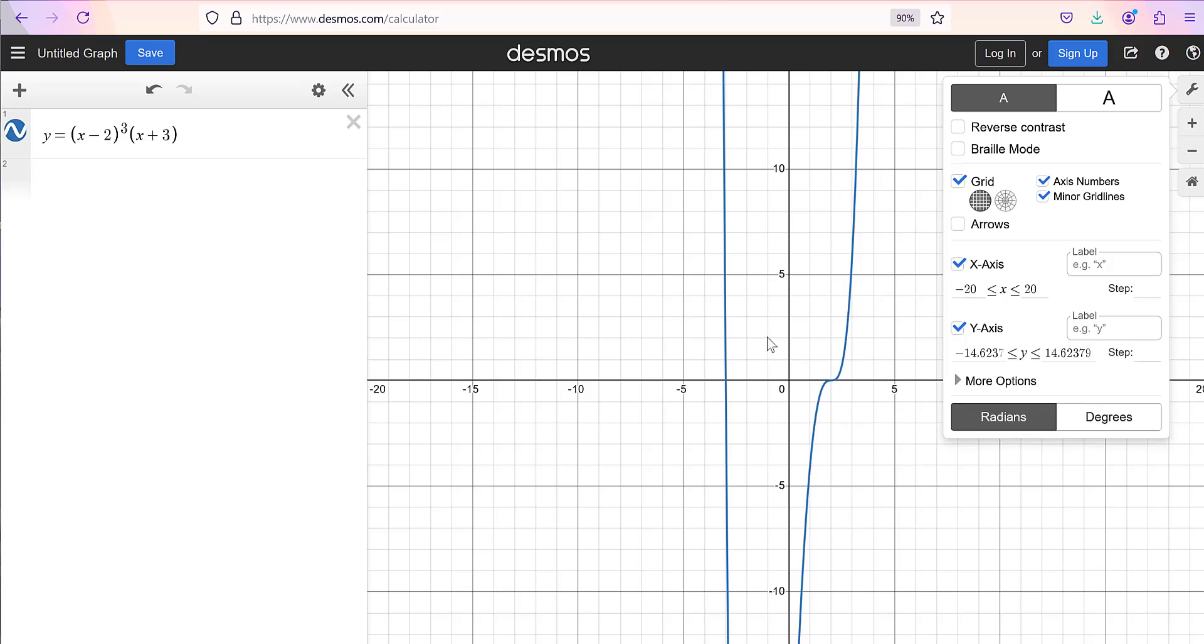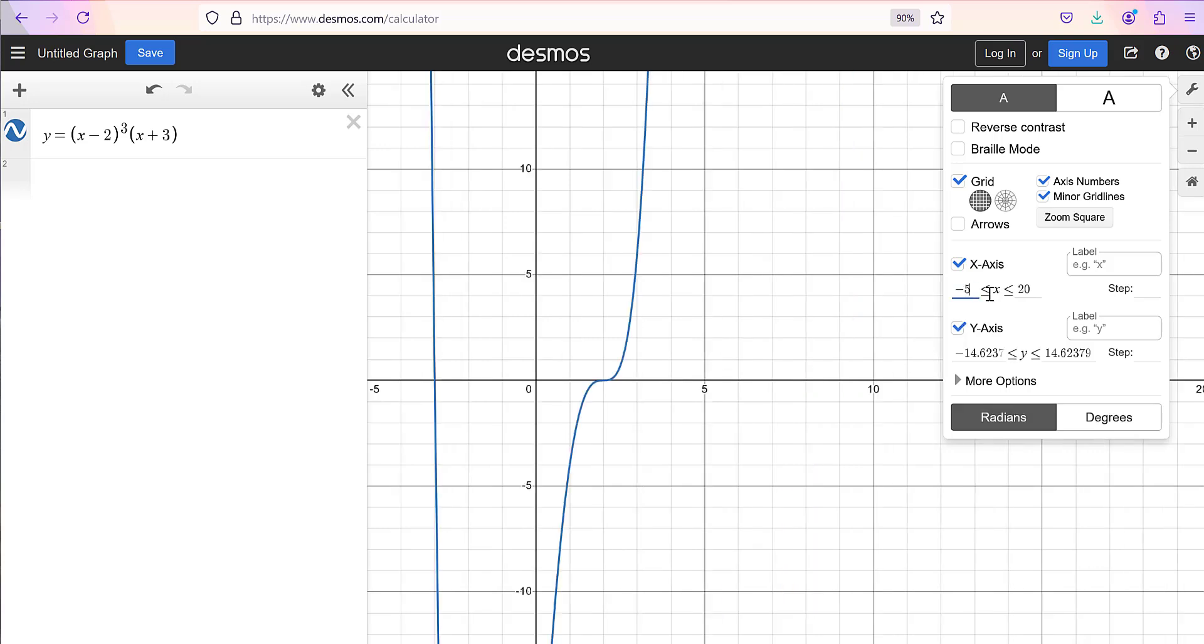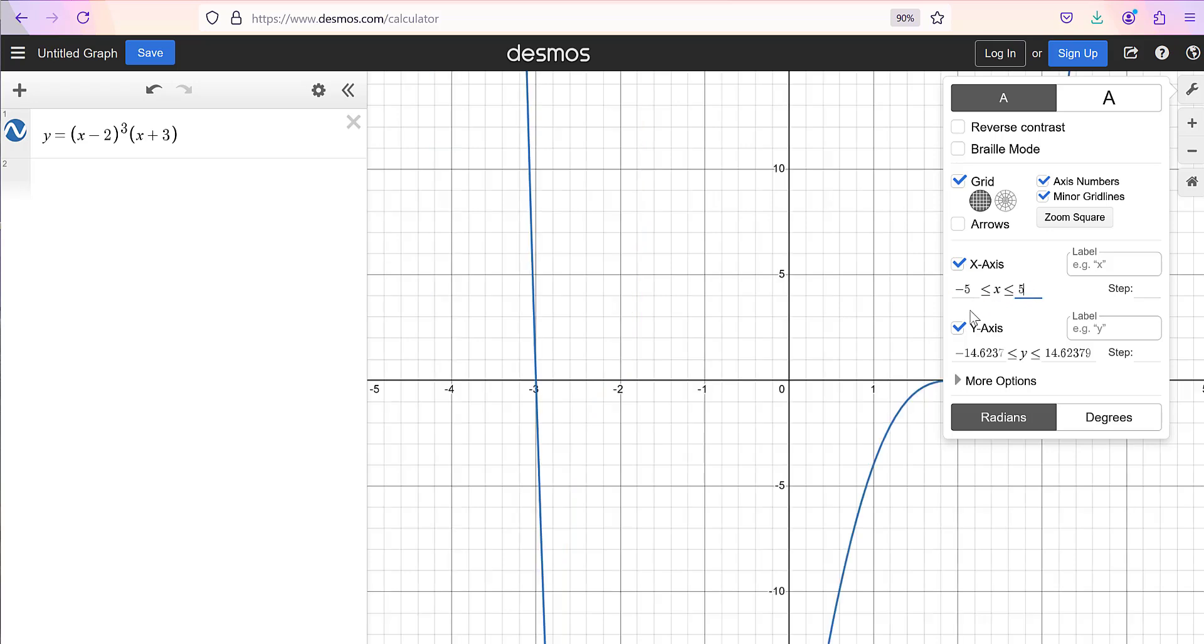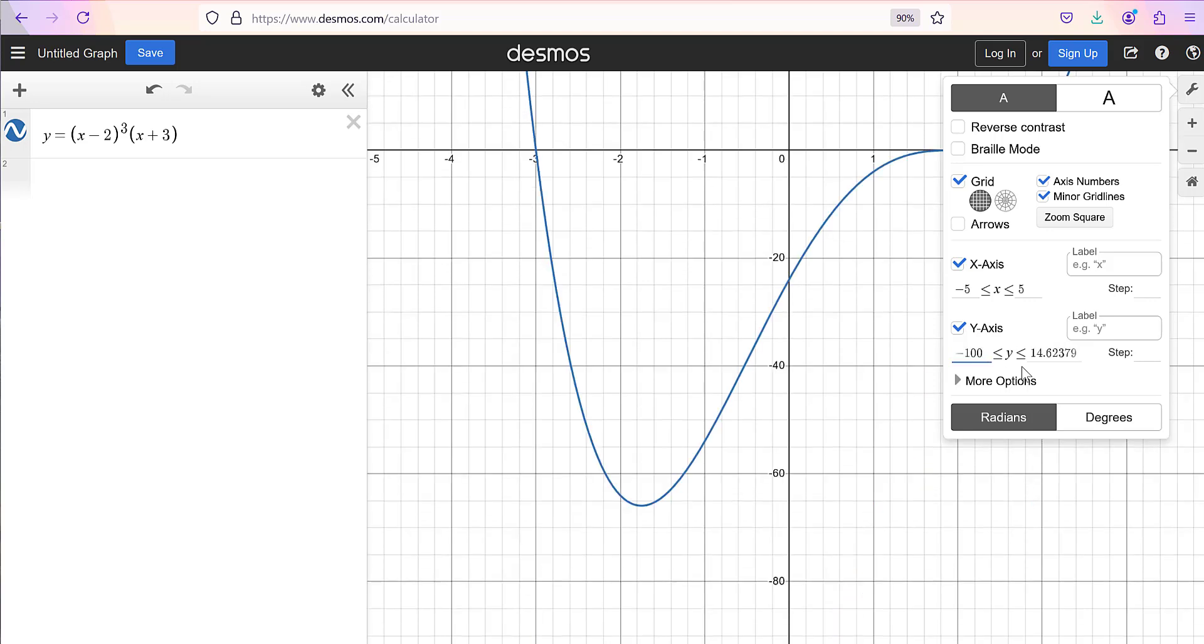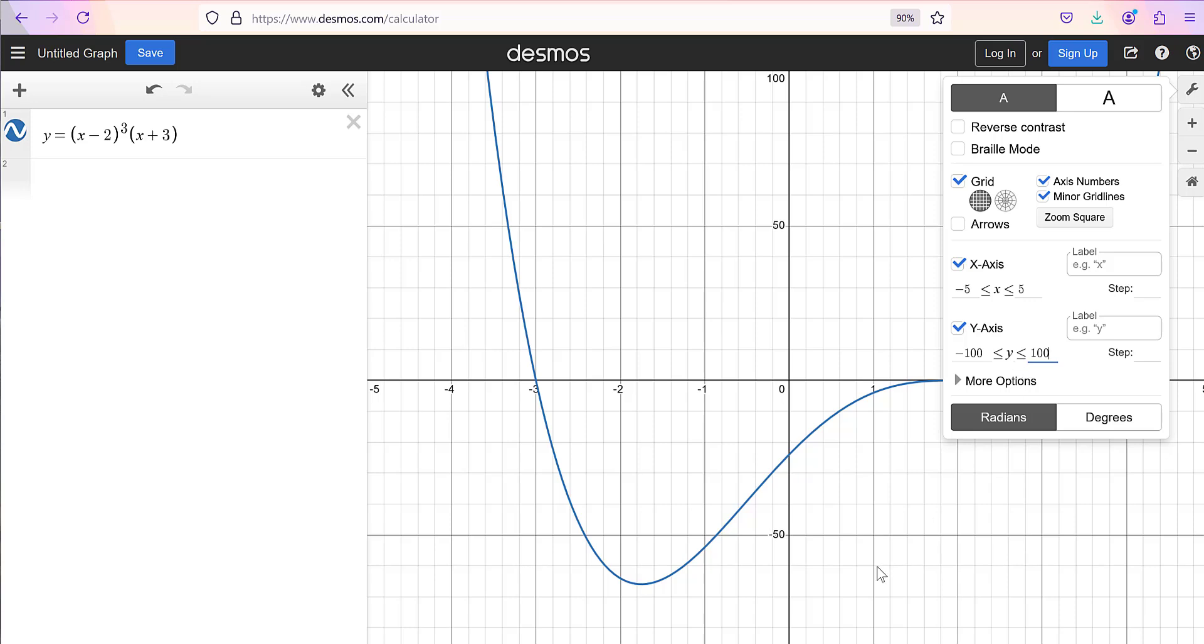So for the x-axis I don't think I need anything bigger than negative 5 to 5, so I'm going to adjust that. And then for that y-axis I need a pretty big number, so let's choose negative 100. And if I overdid it I can always fix it up later, but let's see how that looks.